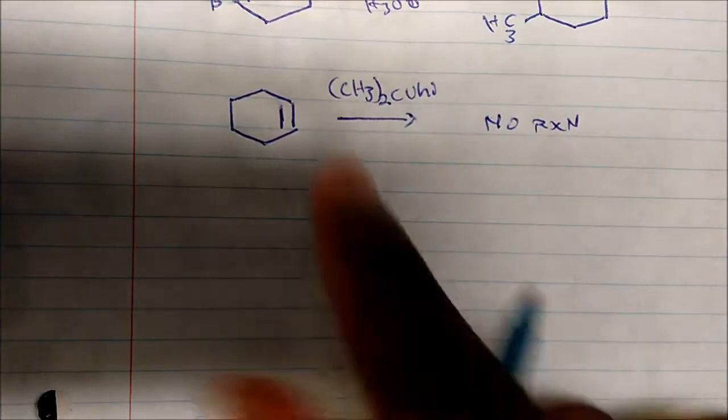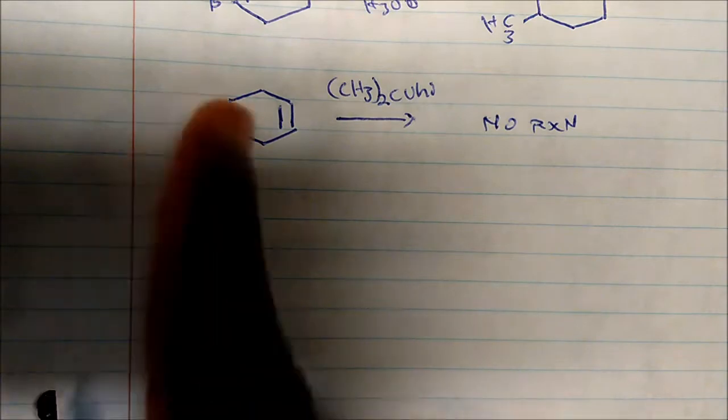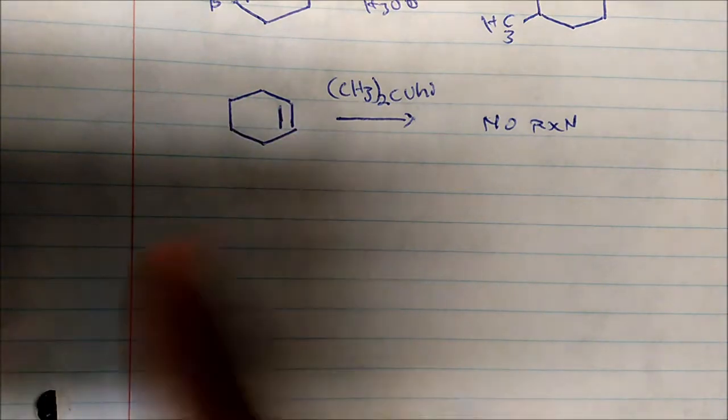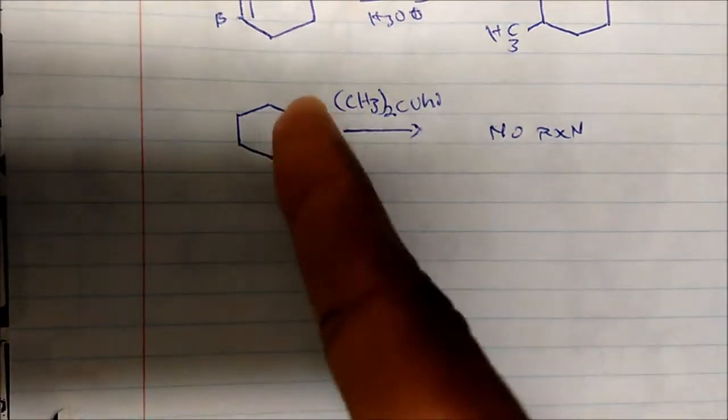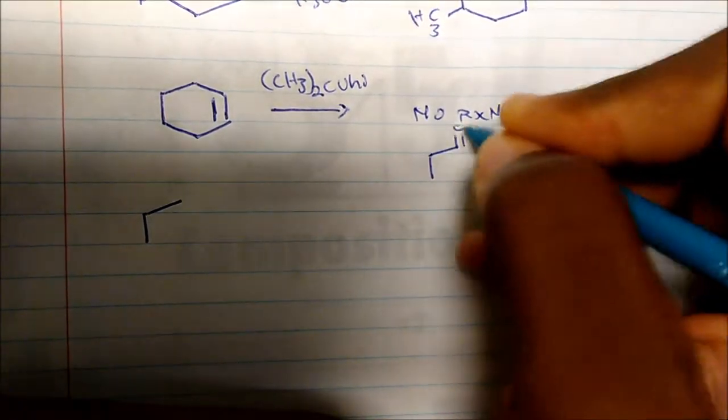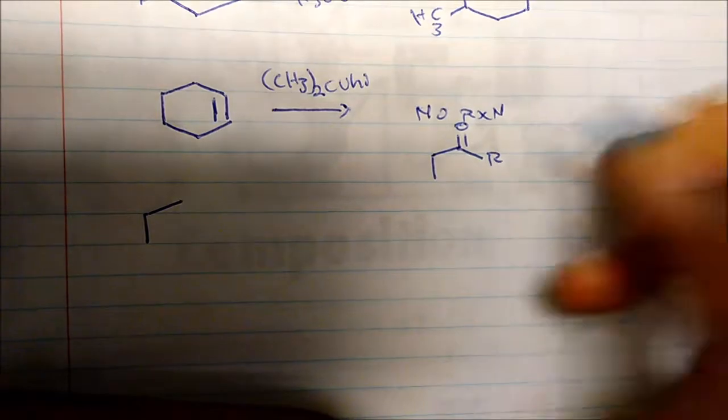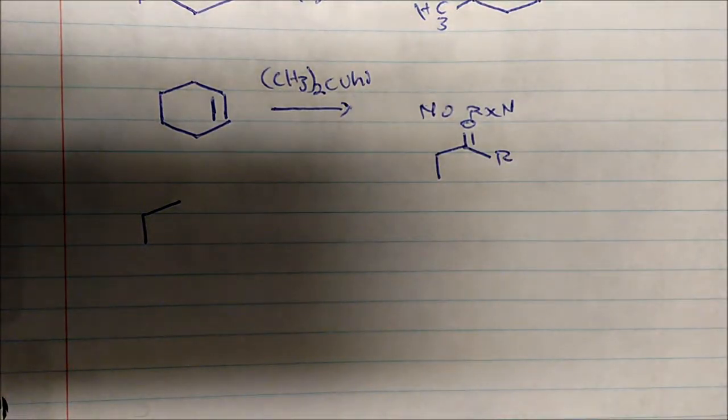If we had a ketone on this, we would have reacted. But why did cyclohexene not react with the Gilman chemistry? It's because of resonance. If I'm looking at just this part of the cyclohexene molecule, I'm just going to replace this with an R because an R goes around. I could actually draw three resonance forms.